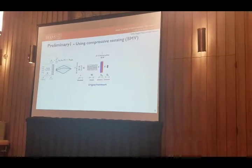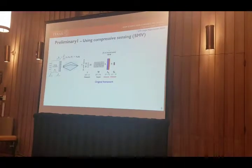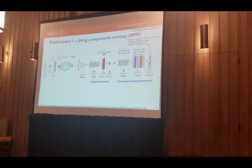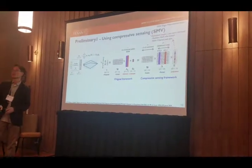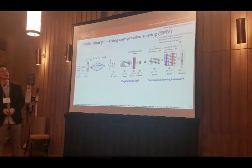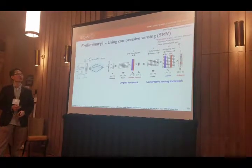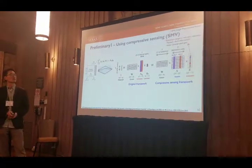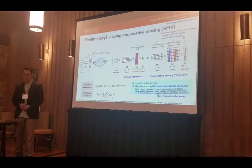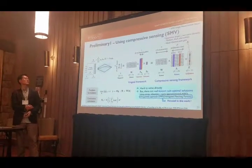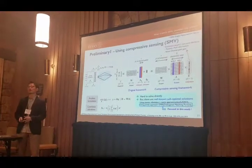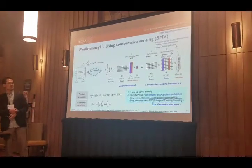We assume the number of channel paths L is small. The original signal model can be rewritten in the compressive sensing framework. The measurement matrix A is known as the dictionary matrix and is known to the base station. So the only thing the base station needs to estimate is the sparse vector G, which has L non-zero elements. The positions of these non-zero elements indicate the angle-of-arrival information, and their values indicate the channel path gains.